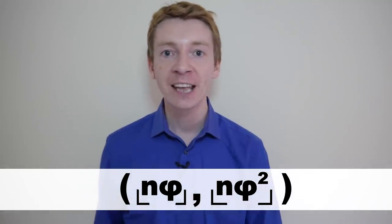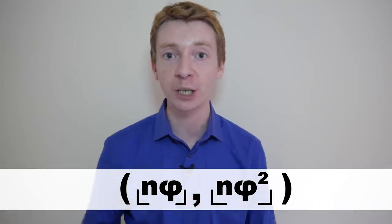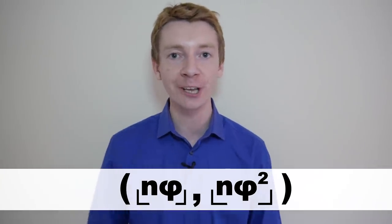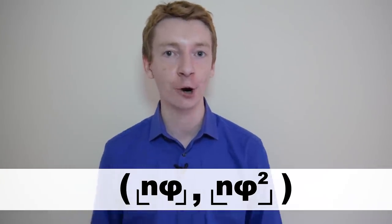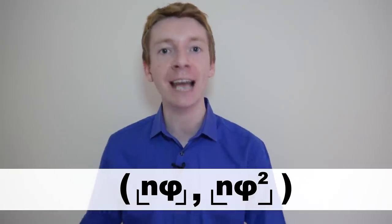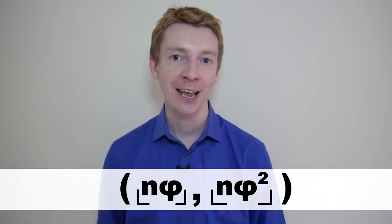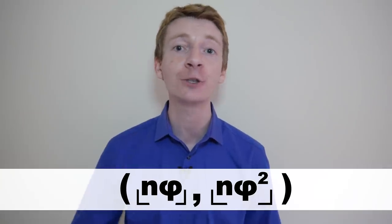So here, phi stands for the golden ratio, which is 1.618. And the first coordinate is n times the golden ratio, and then rounded down to the previous integer. And the second coordinate is n times the golden ratio squared, also rounded down to the previous integer.